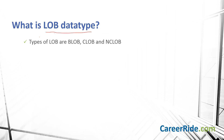What is LOB data type? LOB is a large object data type. Tables can have multiple columns for LOB data types. But LOBs cannot be primary keys nor used with DISTINCT, GROUP BY, ORDER BY, or JOIN. Types of LOB are BLOB, CLOB, and NCLOB.